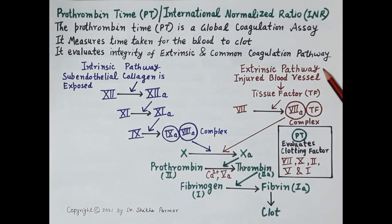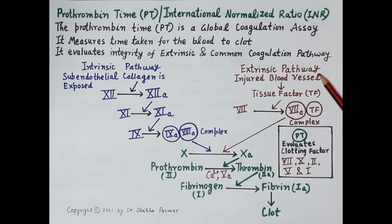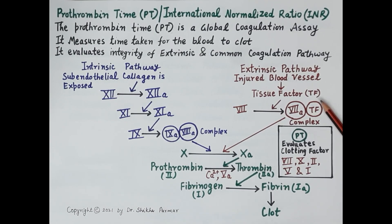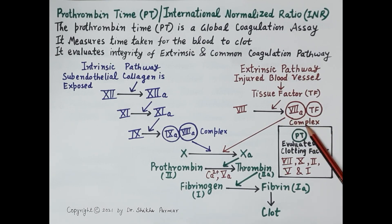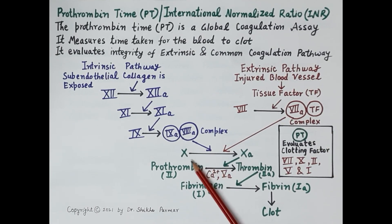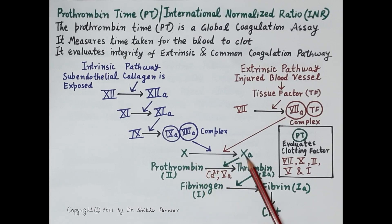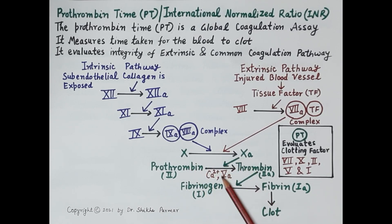The injured wall of the blood vessel releases a clotting factor called tissue factor. This tissue factor activates clotting factor 7 to 7a. Clotting factor 7a then complexes with the tissue factor, and this complex is responsible for the activation of clotting factor 10 to 10a.